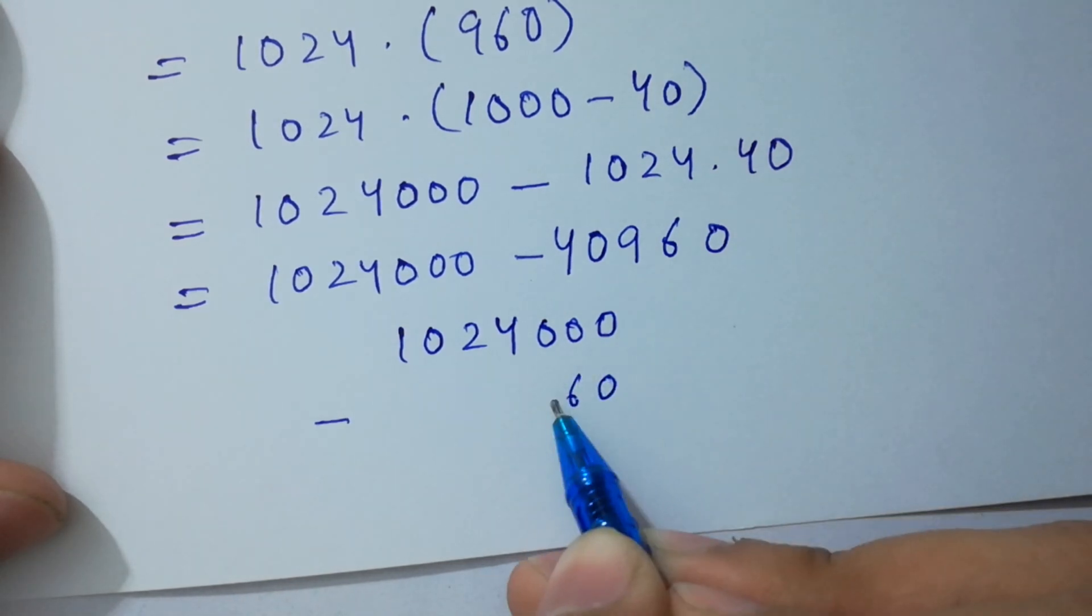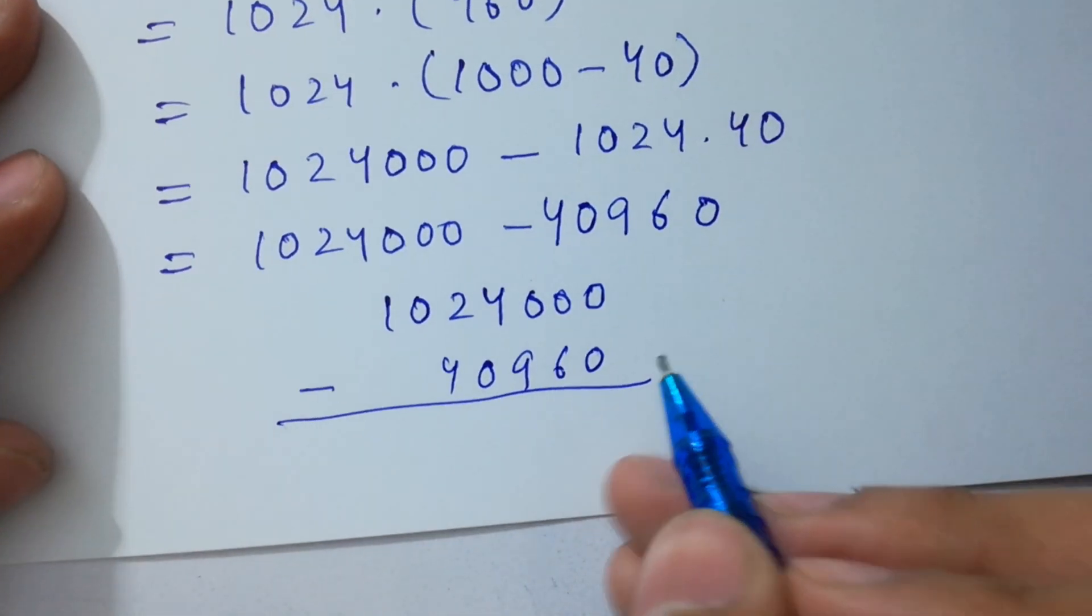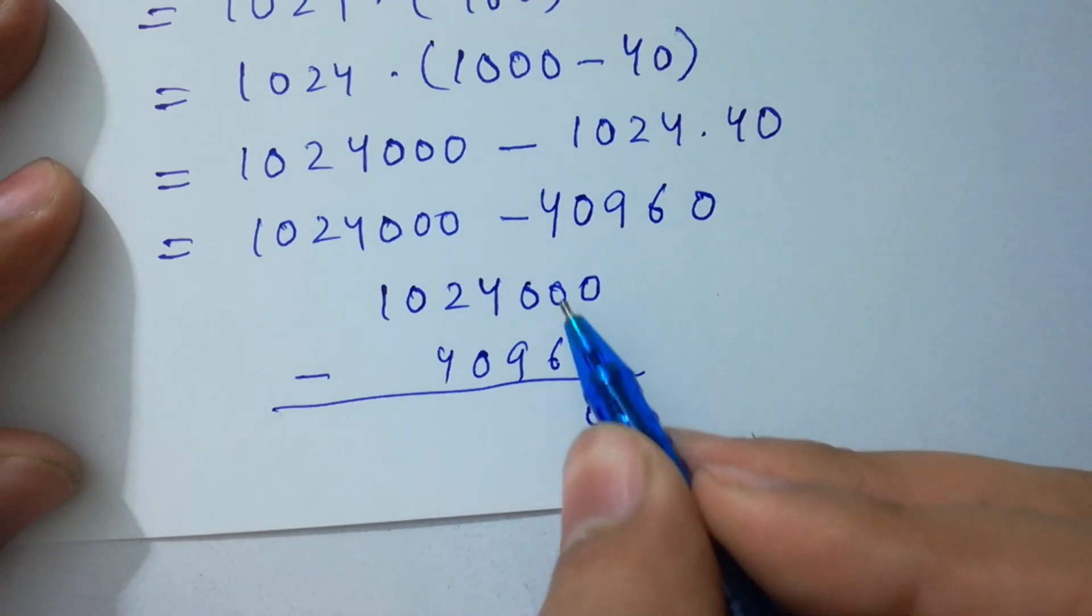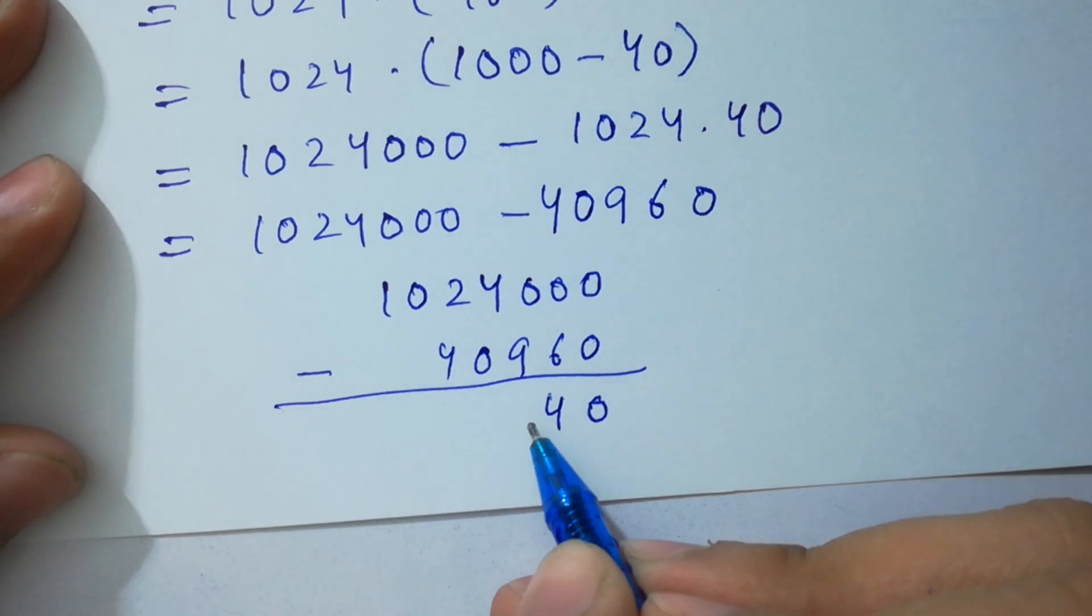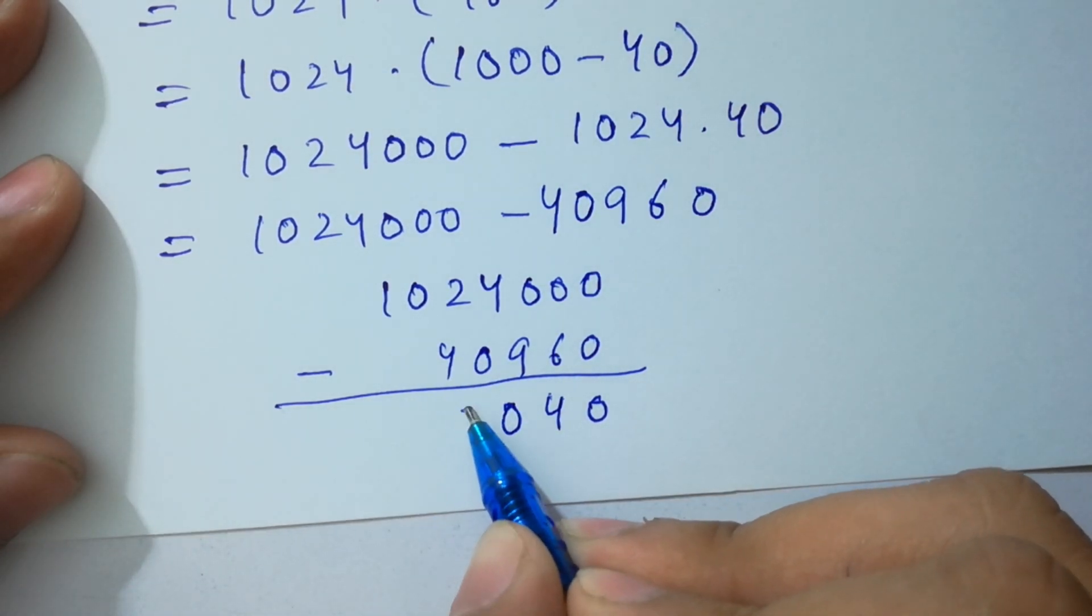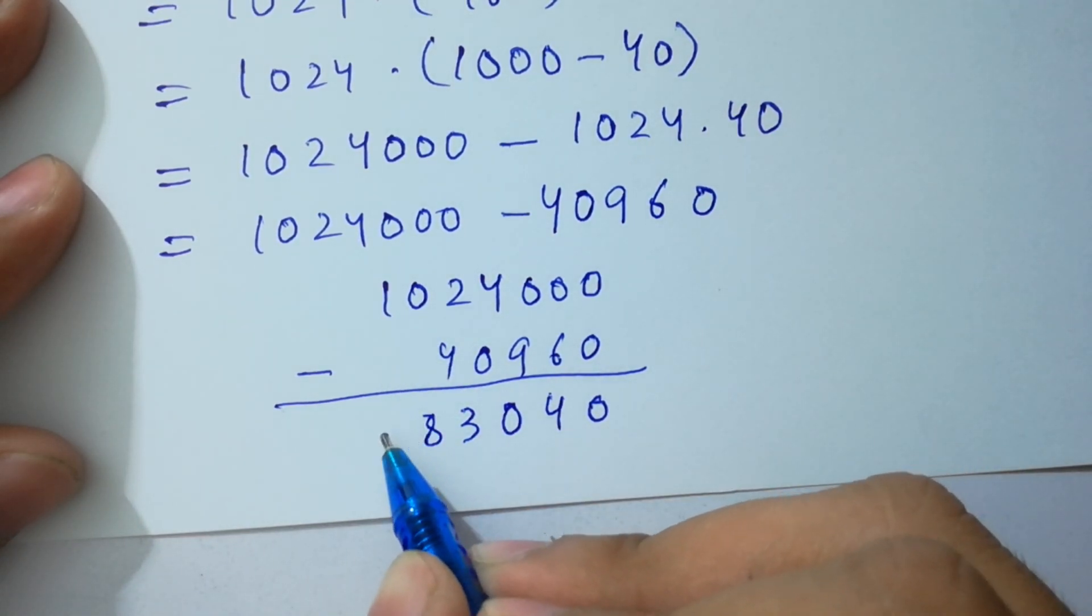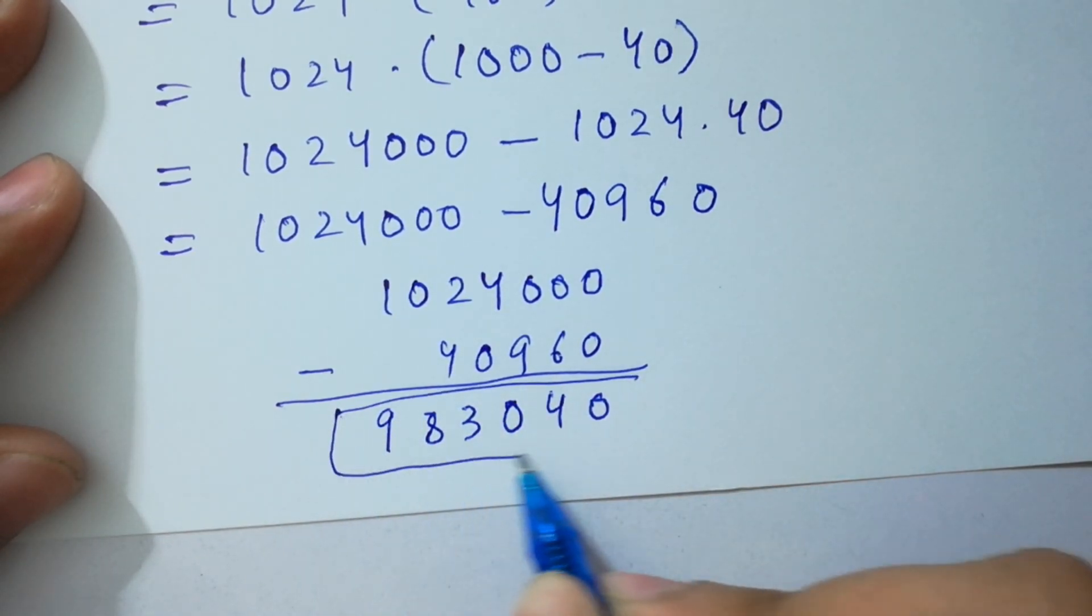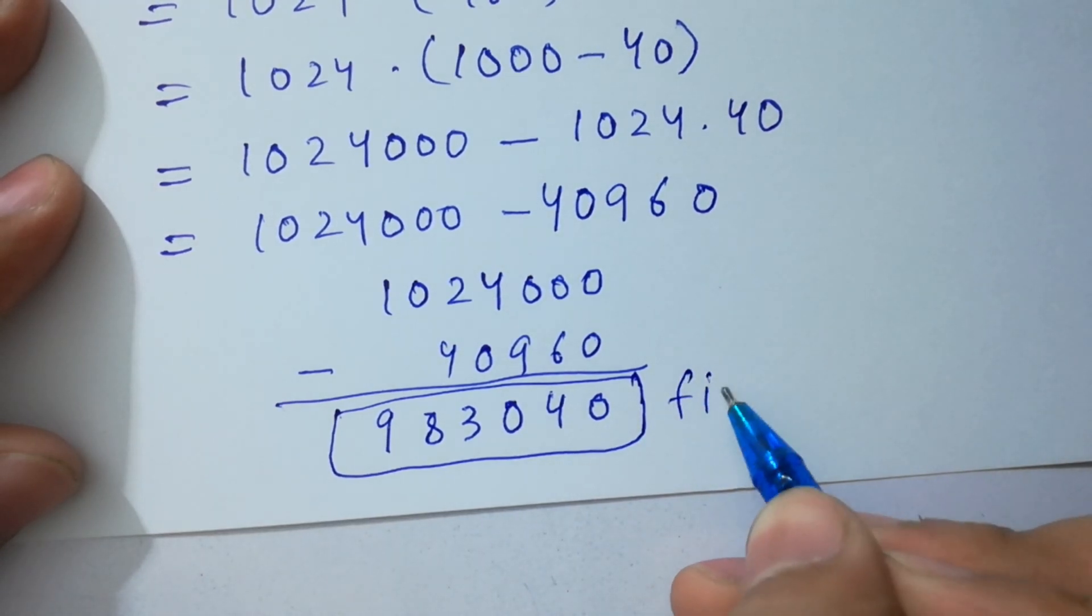Next step: 1024000 minus 40960. Subtracting: 0 - 0 = 0, 10 - 6 = 4, 9 - 9 = 0, 3 - 0 = 3, 12 - 4 = 8, and 9. So 983040 is our final answer.